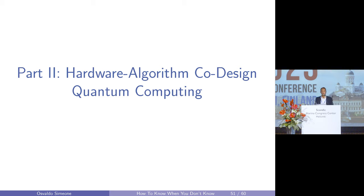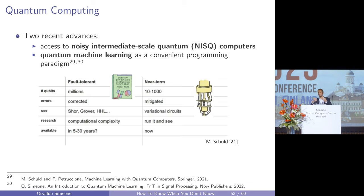Let me briefly talk about quantum computing, which is a more futuristic technology. The reason I bring it up is that quantum computing has made significant strides toward wider accessibility — you can now access quantum computers from your laptop through a cloud interface. There is also a practical way to program quantum computers called quantum machine learning, which is an optimization-based technique accessible to those without deep expertise in quantum physics.